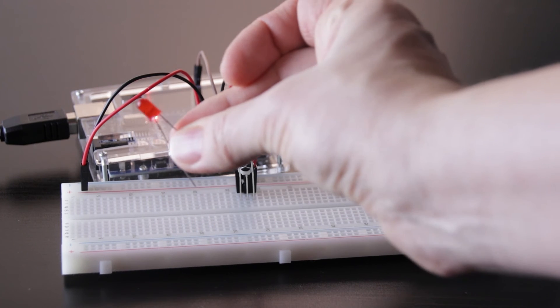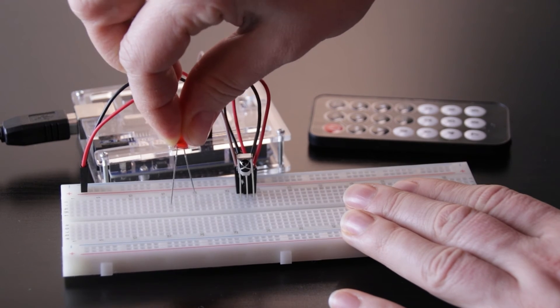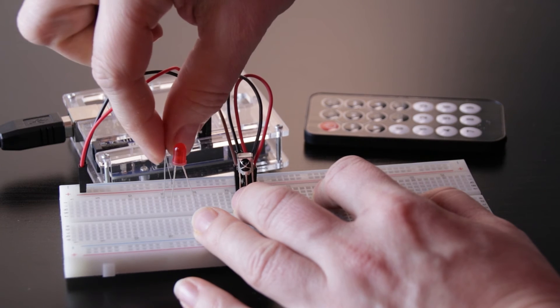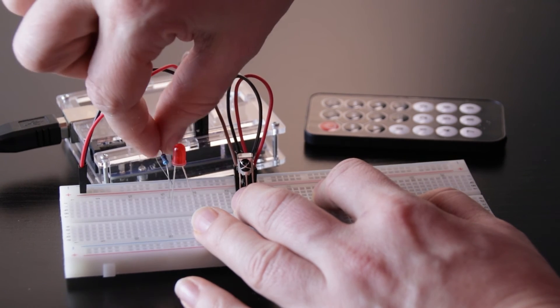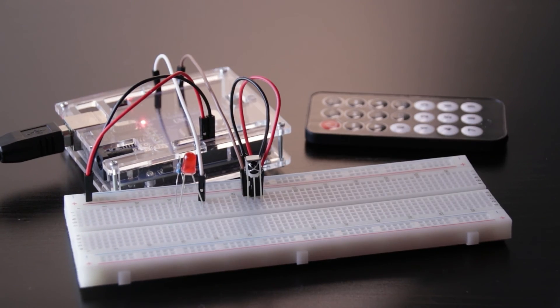For the second and last circuit today I am using a red LED that will light up when number 5 on the remote is pressed. From the negative leg of the LED I will connect through the 1kohm resistor to the negative rail. From the positive leg of the LED I will connect to pin 10 on the Arduino.